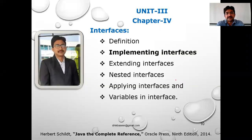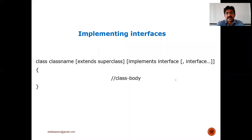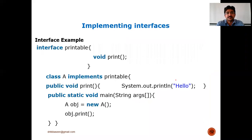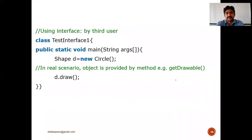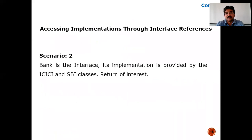A class can extend another class, a class can implement an interface, and an interface can extend another interface. When implementing interfaces, we use the class keyword followed by the class name. We can use 'extends' for a super class if applicable, or we can use 'implements' for the interface. These are all optional parts shown in square brackets.